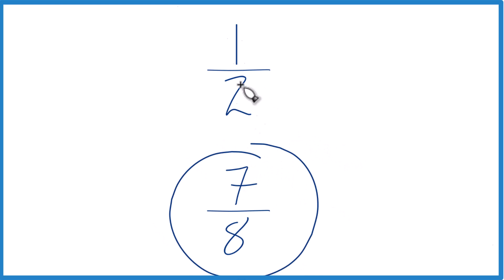You'll see that seven-eighths, that is larger than one-half, and you can kind of just look at them. One goes into two twice, seven, that doesn't go into eight just once, maybe a little bit of a remainder.